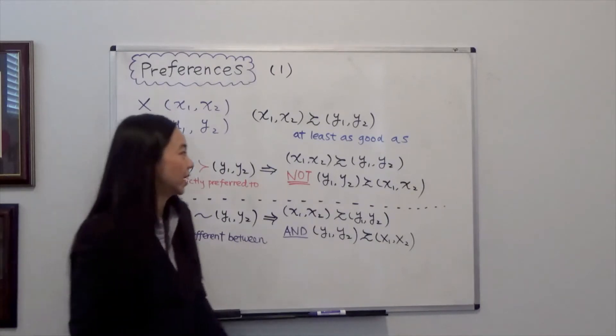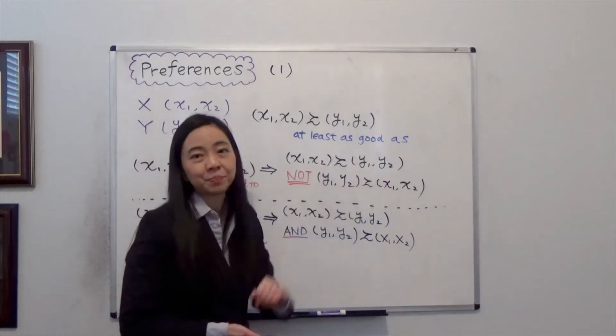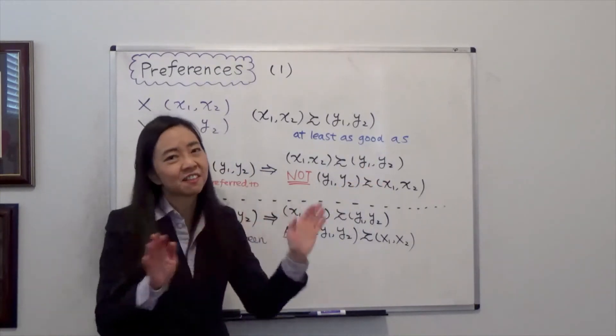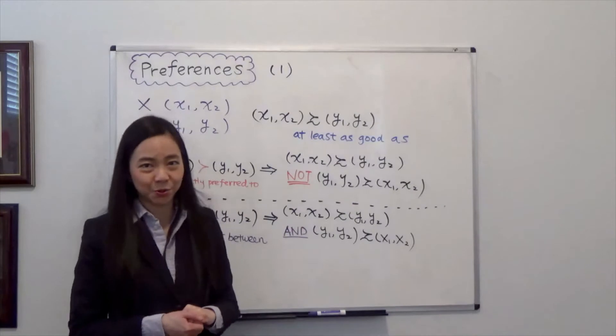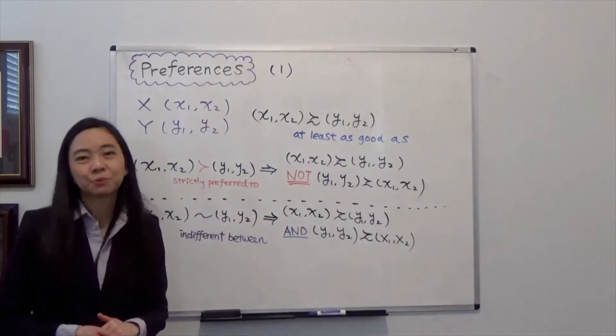That happens when bundle X is at least as good as bundle Y, but bundle Y is not at least as good as bundle X. Then we say that bundle X is strictly preferred to bundle Y.